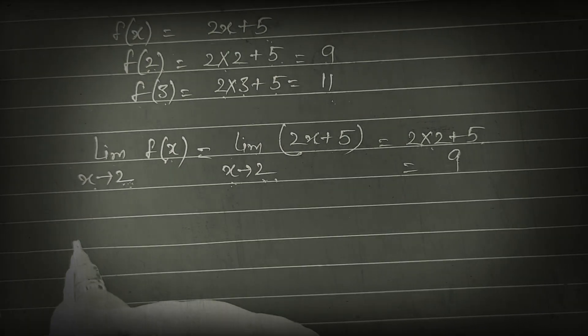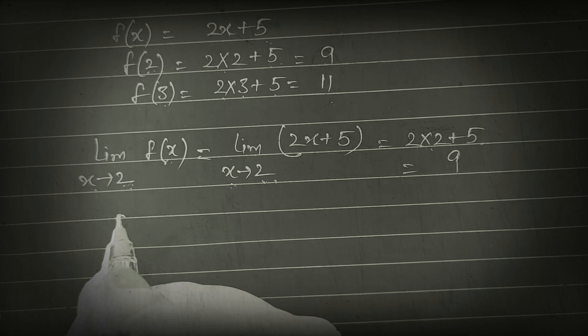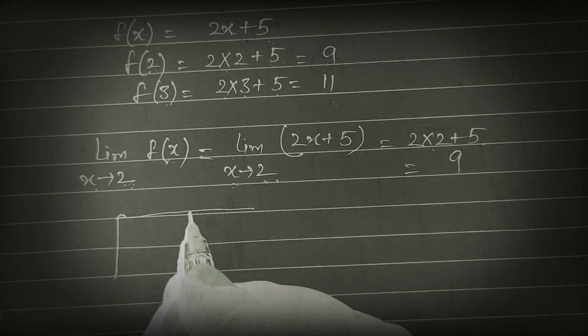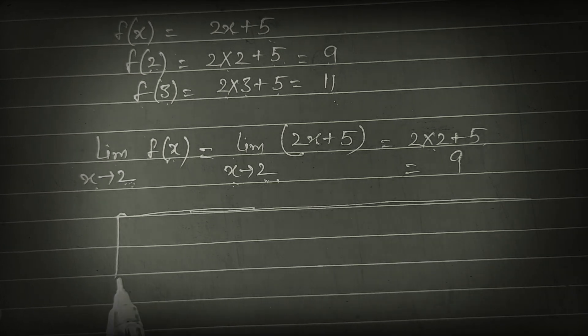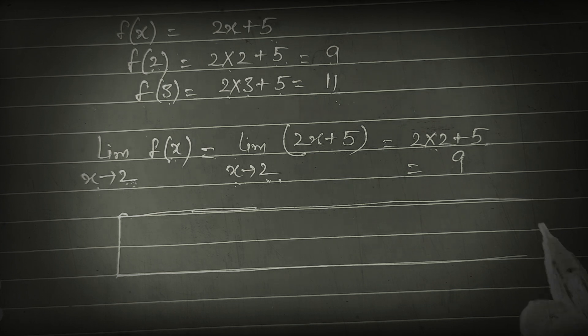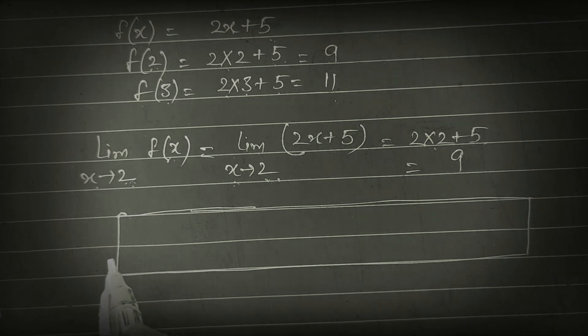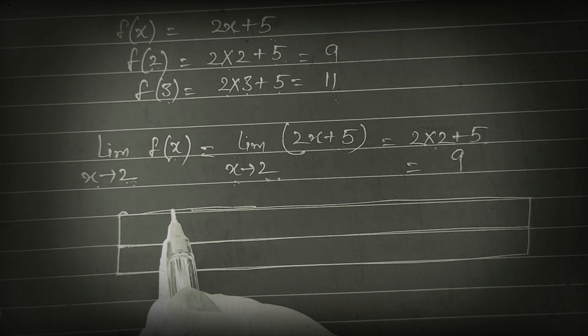In another way, if x approaches 2, x can be slightly less than 2 or slightly greater than 2 — 2 ko approach kar rahi hai.